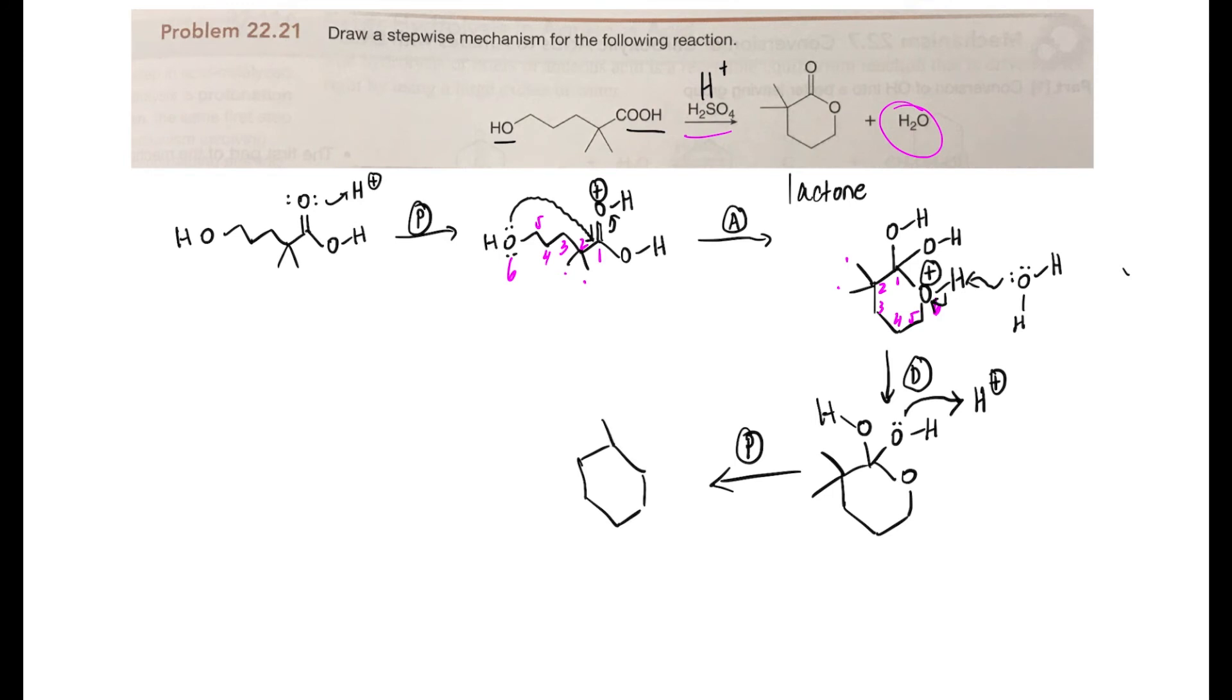Now we've set up a situation where we could have neutral water be the leaving group. So my oxygen atom here—always use your lone pairs—can displace water. I'll just write -H2O below the arrow to indicate that the water has been released.